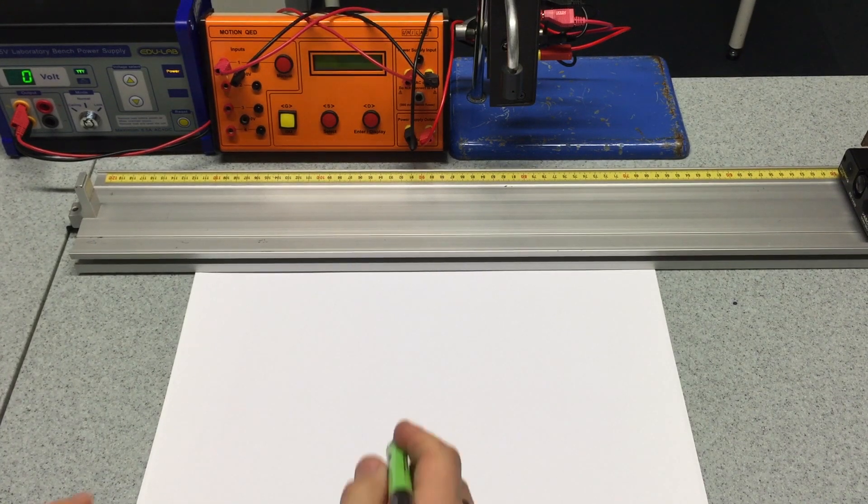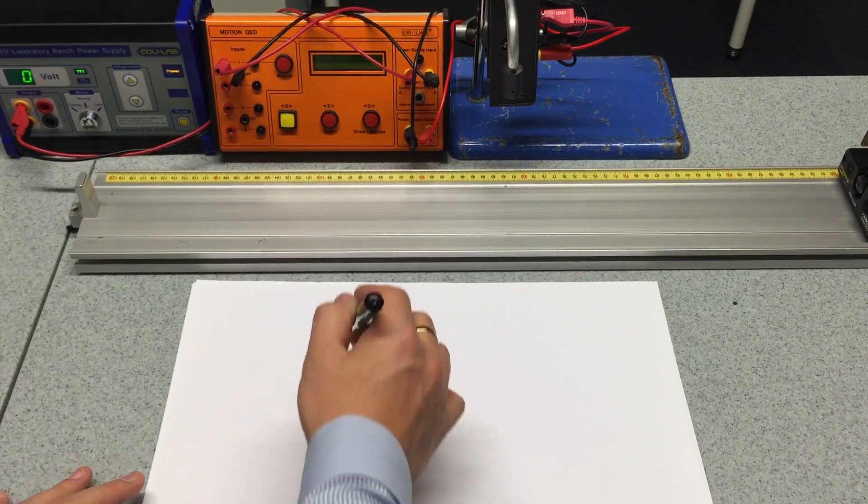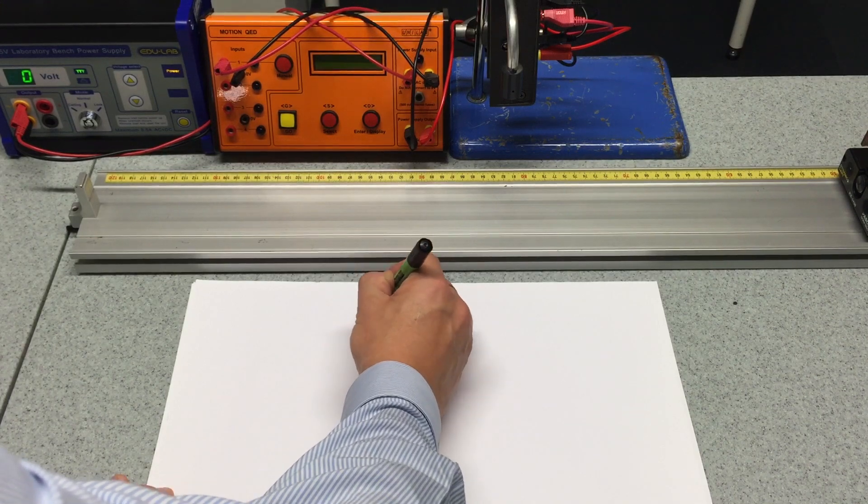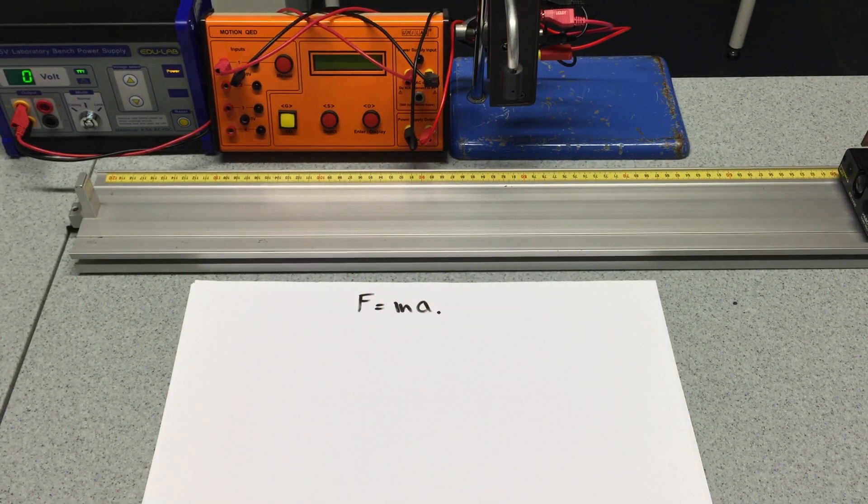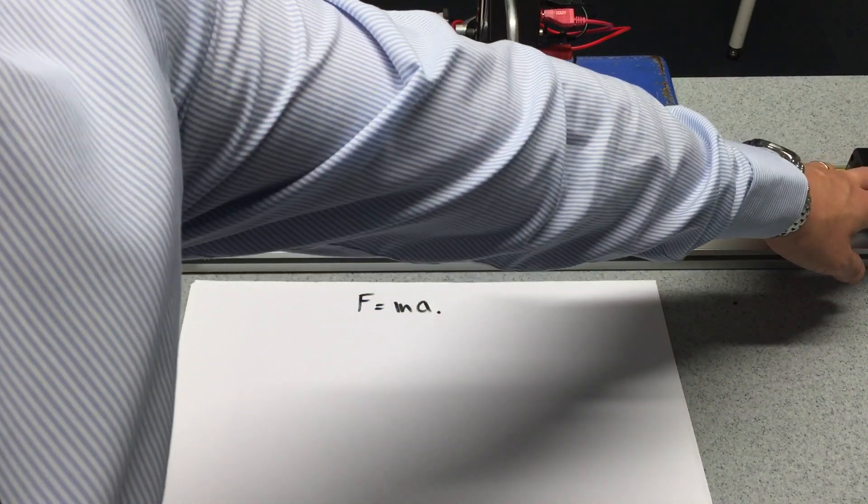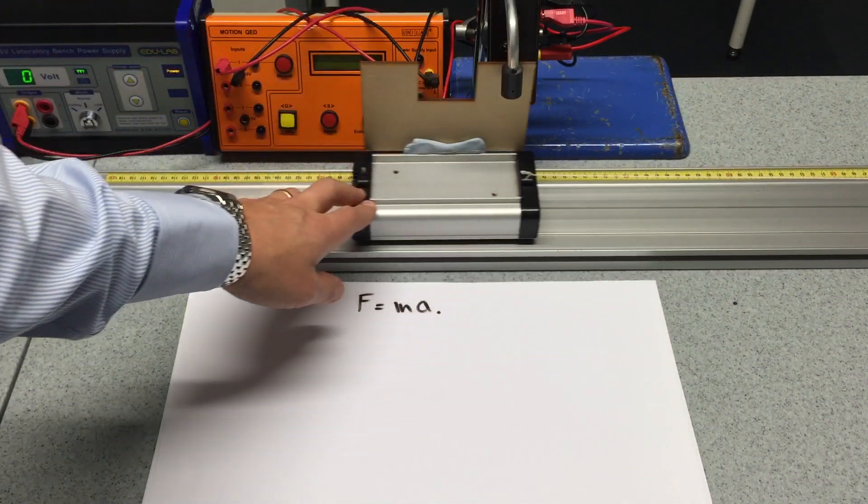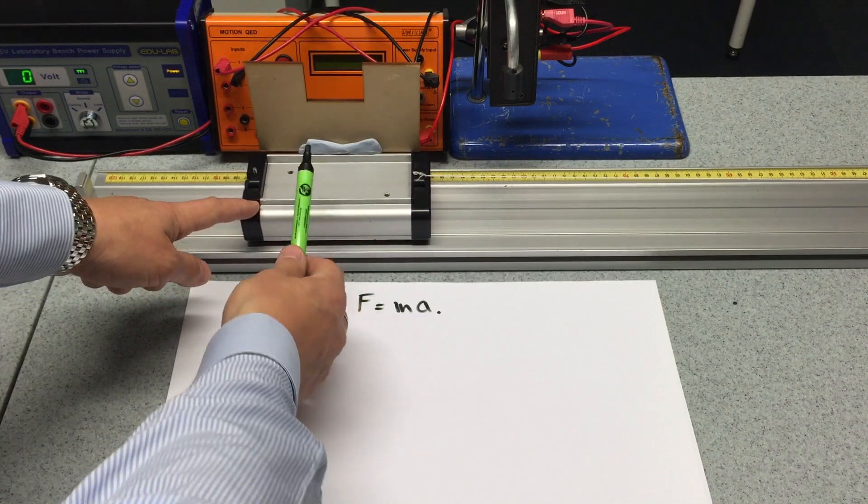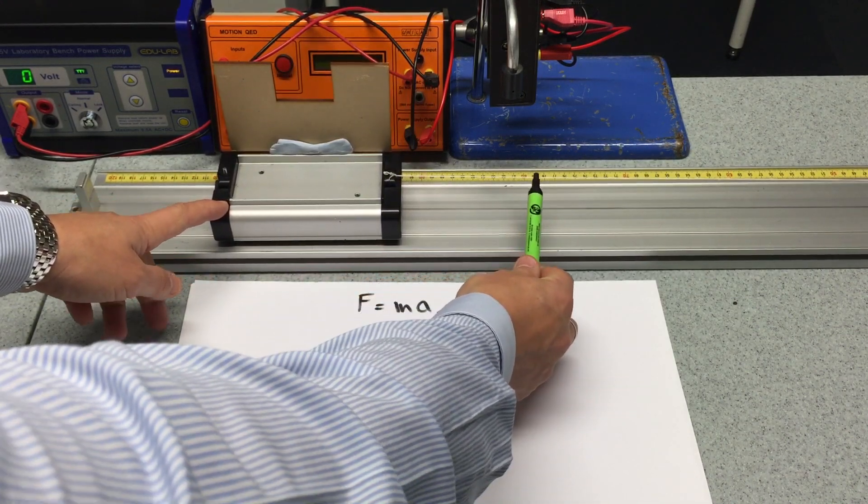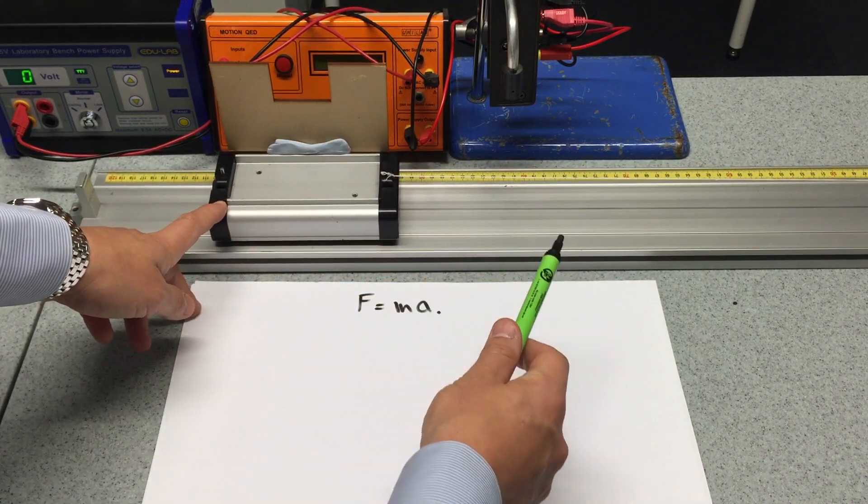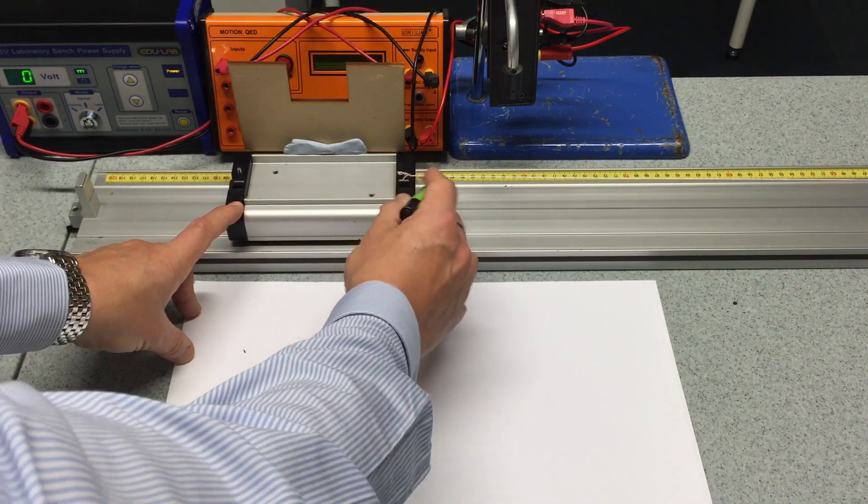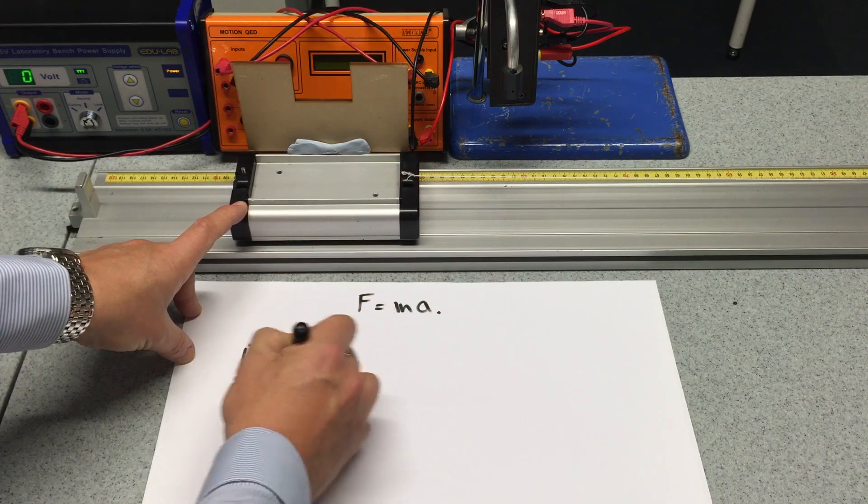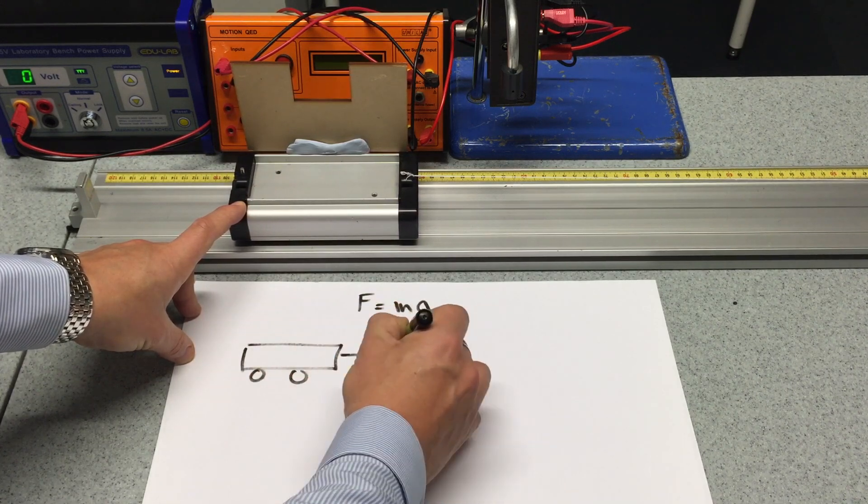Okay, here's an experiment which we're looking to investigate Newton's second law, or in other words, whether F equals MA. It's quite an easy experiment. It makes use of a trolley, and we're looking at what type of force that's exerted along this piece of string.